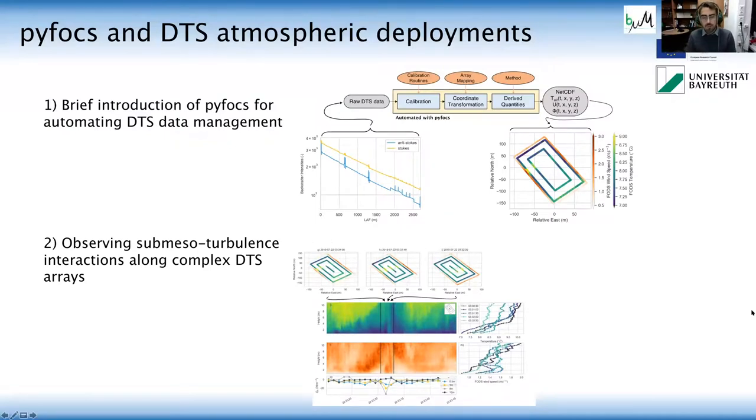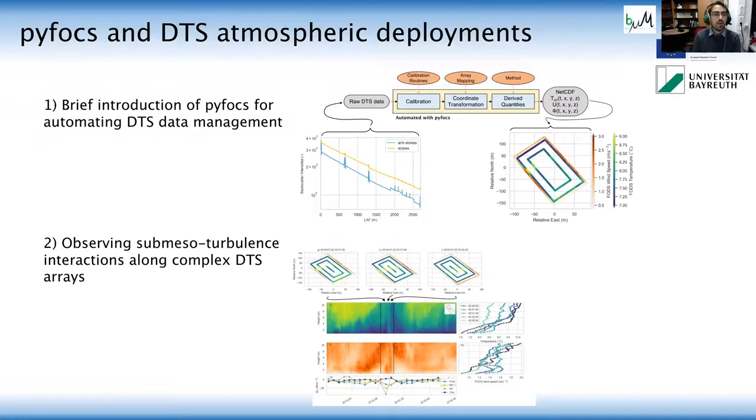So I'm just going to quickly talk about our Python tool that we use for DTS management, and then I'll kind of do a whirlwind tour of a sub-mesomotion that Christoph talked about. So we've developed this tool called PyFox, which allows us to take these snapshots of the instrument output and then convert this into this now kind of complex geometry that we have here on the right.